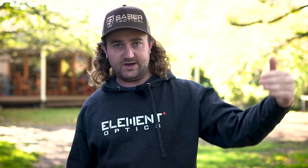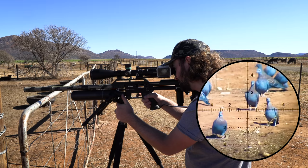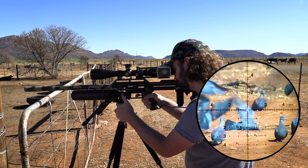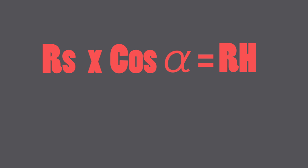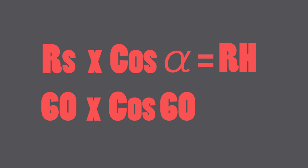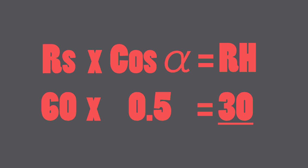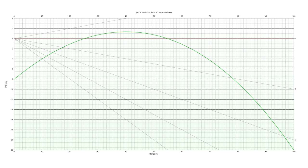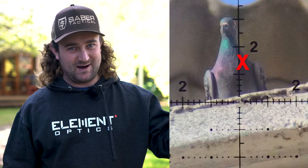We multiply the cosine by your actual range to give you your effective horizontal range. Under normal circumstances, when the incline is only a few degrees, the rule works pretty well — but let's see what happens when you apply it to a steep angle. My shooting distance was 60 meters and my shooting angle was 60 degrees. The cosine of 60 is 0.5, multiplied by 60 equals 30 meters. If this rule is correct, then according to the graph, at 30 meters my point of impact should have been about a quarter mil above zero — except it wasn't. It was 1.5 mils above zero.